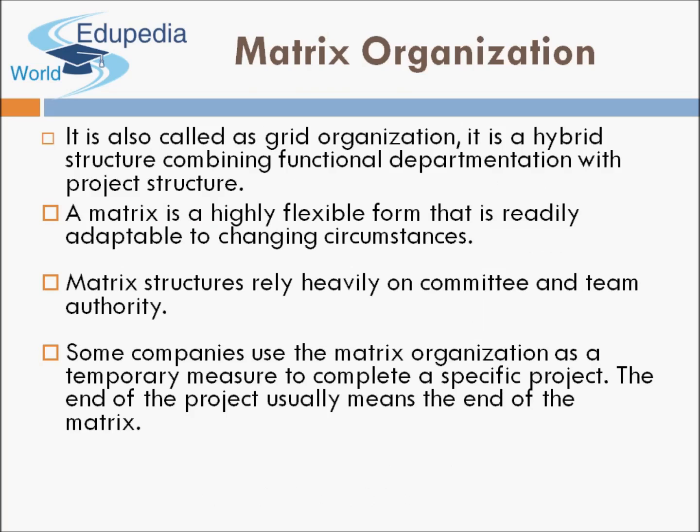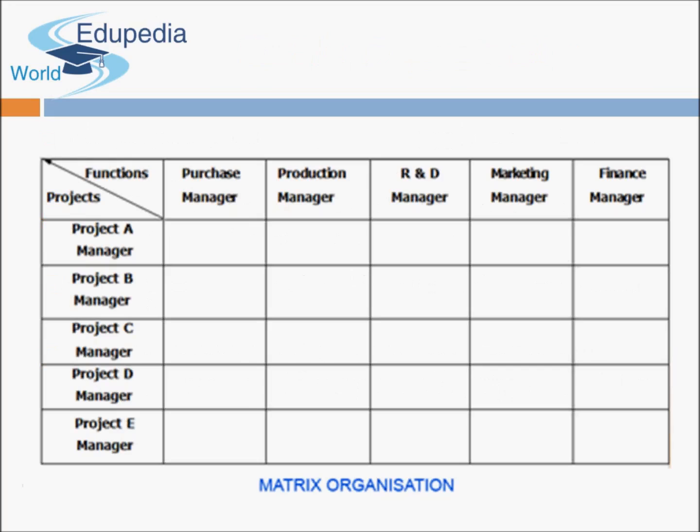Matrix is a wonderful way of departmentalizing. It is a mixture of functional and project departmentalization — the company has functional departments but also has project departmentalization simultaneously. When a company takes on projects, it picks people from different functions like purchase, production, R&D, marketing, and finance to form a project team. Project A might take one person from each of these departments; similarly, Project B and Project C also draw individuals from each department.